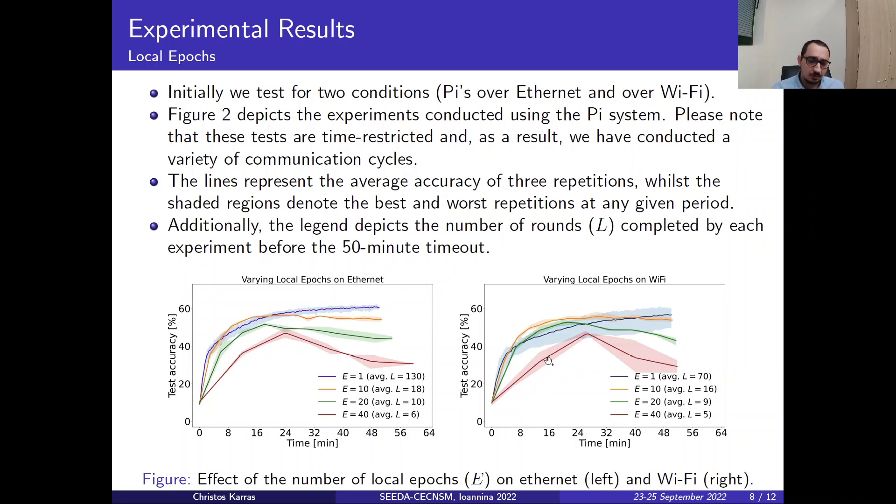And again for the case where we have 40 epochs the accuracy was kind of low compared to the other experiments.